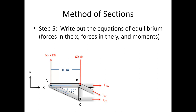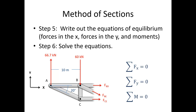Step five is to write out the equilibrium equations: sum of forces in X, sum of forces in Y, and sum of moments about some point — be sure to identify the point, for example sum of moments about point B. Step six is simply to solve the equations. With three equations and three unknowns for this half of the bridge, you should be able to solve for the three unknown member forces. That covers the basic single-cut method of sections analysis.